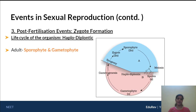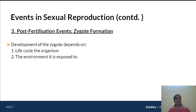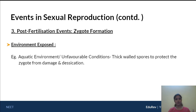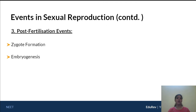If you have a haplodiplontic life cycle — both haploid and diploid phases — you merge the previous two understandings. Examples are bryophyta and pteridophyta. We also said development of a zygote depends on the environment. For example, in algae or fungi, often because of aquatic medium or unfavorable conditions, you will see thick-walled spores being formed, with the environment enforcing thick walls around the spores to protect the developing zygote.